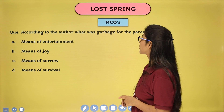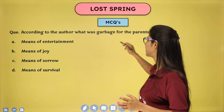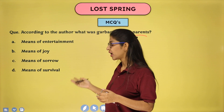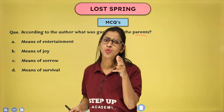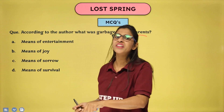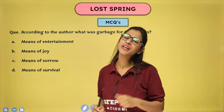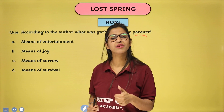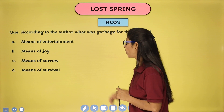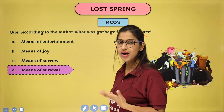According to the author, what was garbage for the parents? Options: means of entertainment, means of joy, means of sorrow, means of survival. The answer is: means of survival. From garbage heaps, parents hoped to find maybe a one-rupee coin, two-rupee coin, and at maximum a ten-rupee coin — which they considered gold. In search of this gold from piles of garbage, they spent their entire days. Sometimes not even one rupee was found, and sometimes if lucky, they might find a ten-rupee coin, enough to eat something.